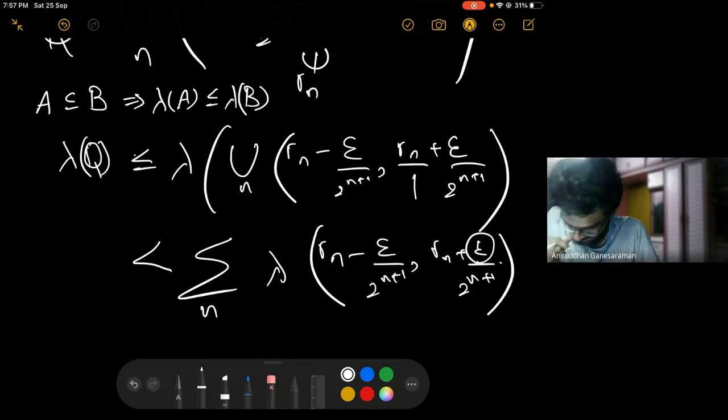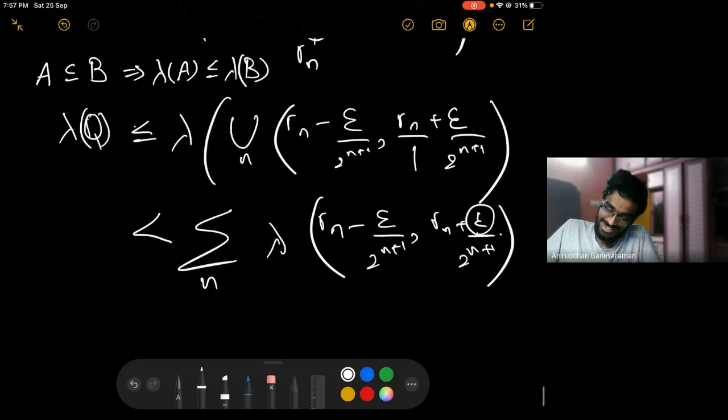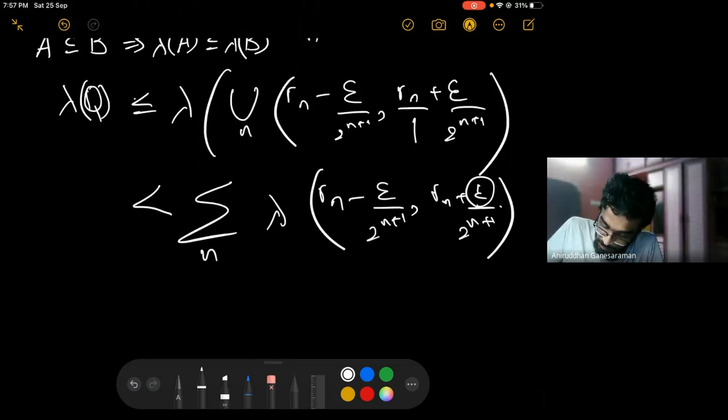This is epsilon over 2^(n+1). Why is this less than or equal to that? Because the balls which you take around each rm, in some sense they touch each other, so where they touch you're counting them twice. So this is a strict inequality. What is this equal to? This is the summation over n, the length is epsilon over 2^n.